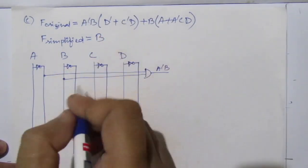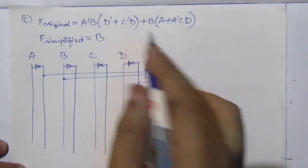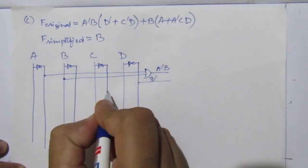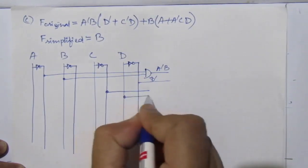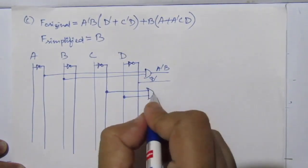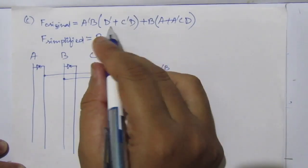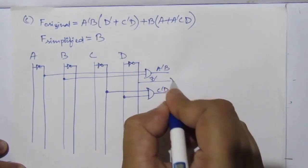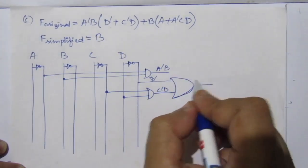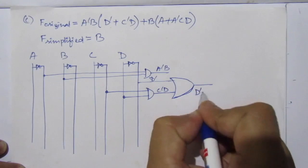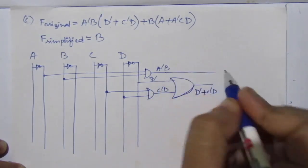Then find d̄ plus c̄·d: d̄ is this line. For c̄·d — c̄ is this line, then d is this line — use an AND gate to get c̄·d. Use an OR gate to add them and get d̄ + c̄·d. Then multiply ā·b with (d̄ + c̄·d) using an AND gate.